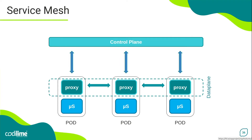The proxies installed next to each service instance form together the data plane of the service mesh, which is a kind of network that connects all the microservices within a given application. The second component of the system is the control plane, which provides the core functionality of the service mesh. In short, it configures and coordinates the behavior of the proxies.